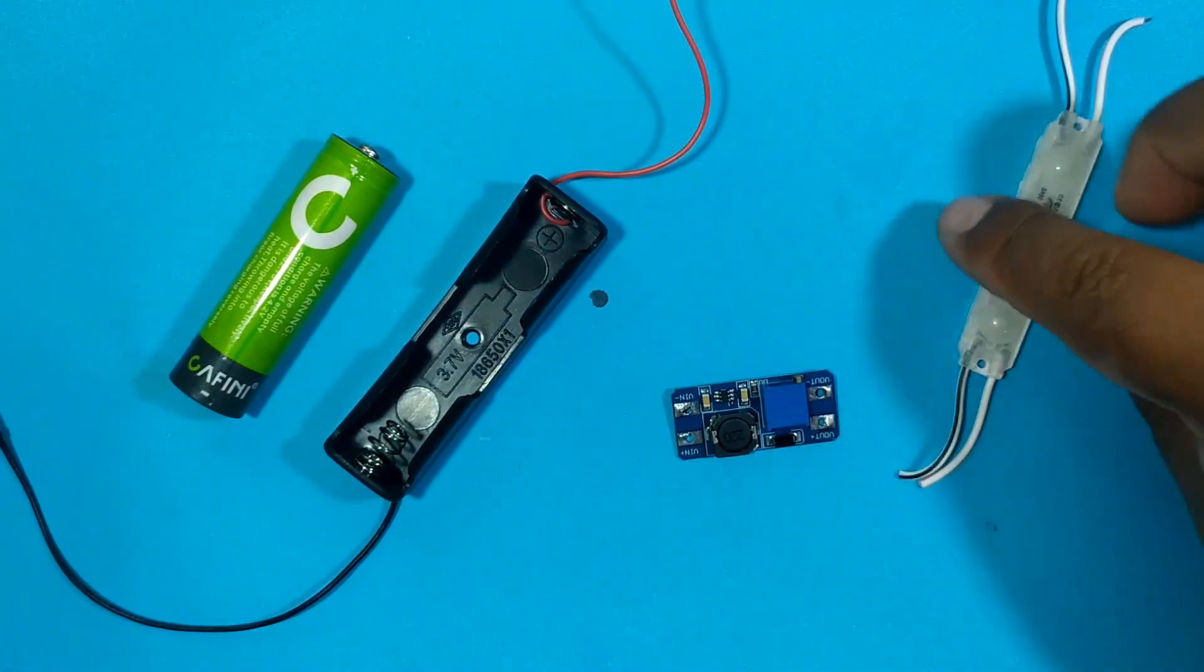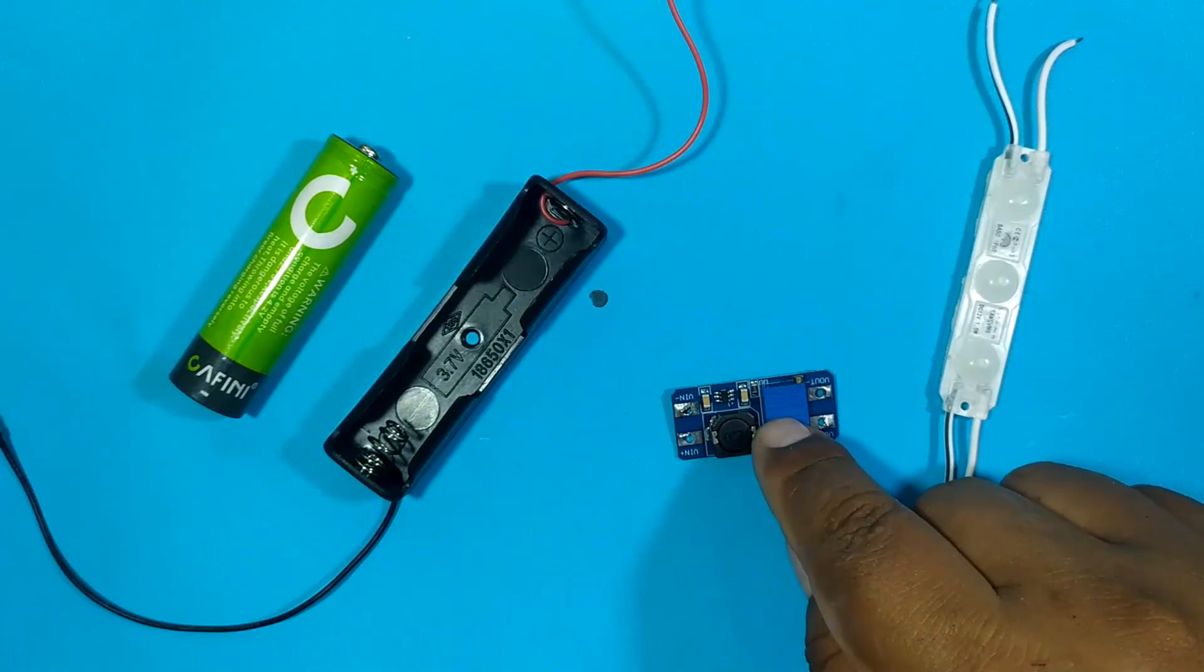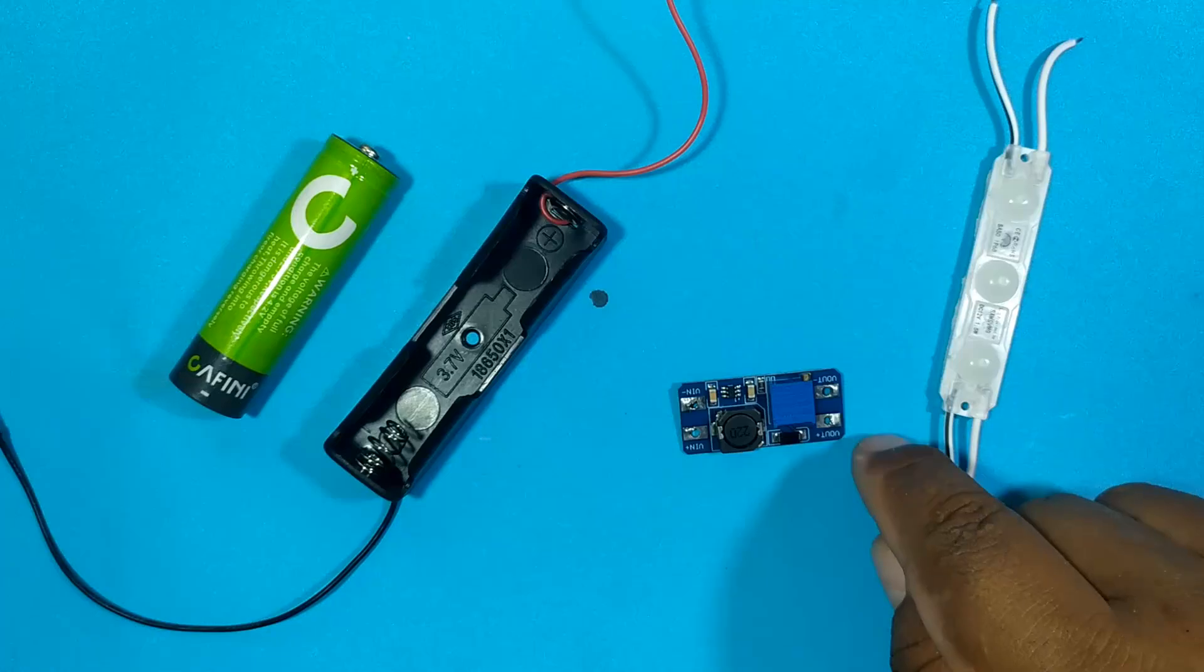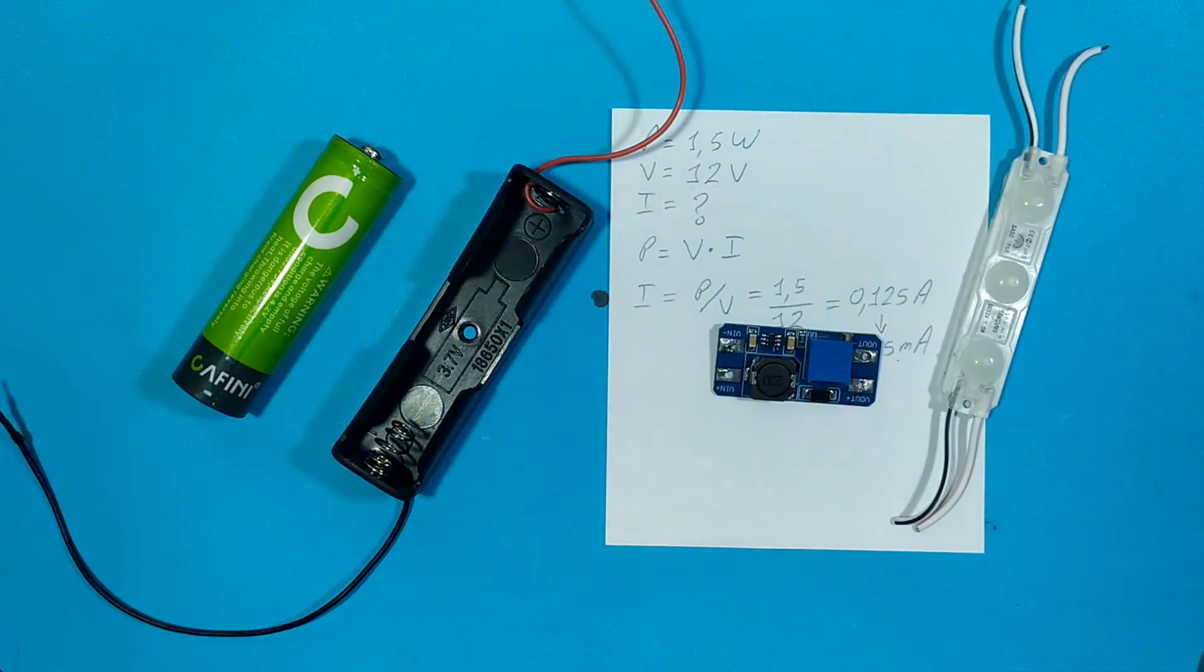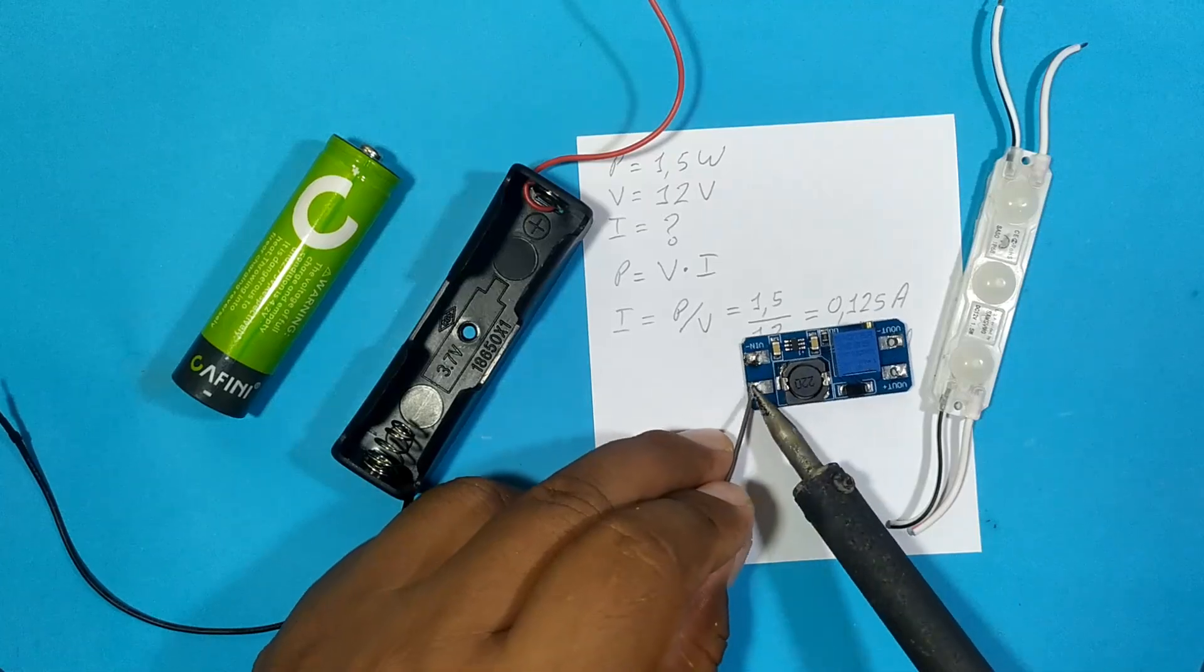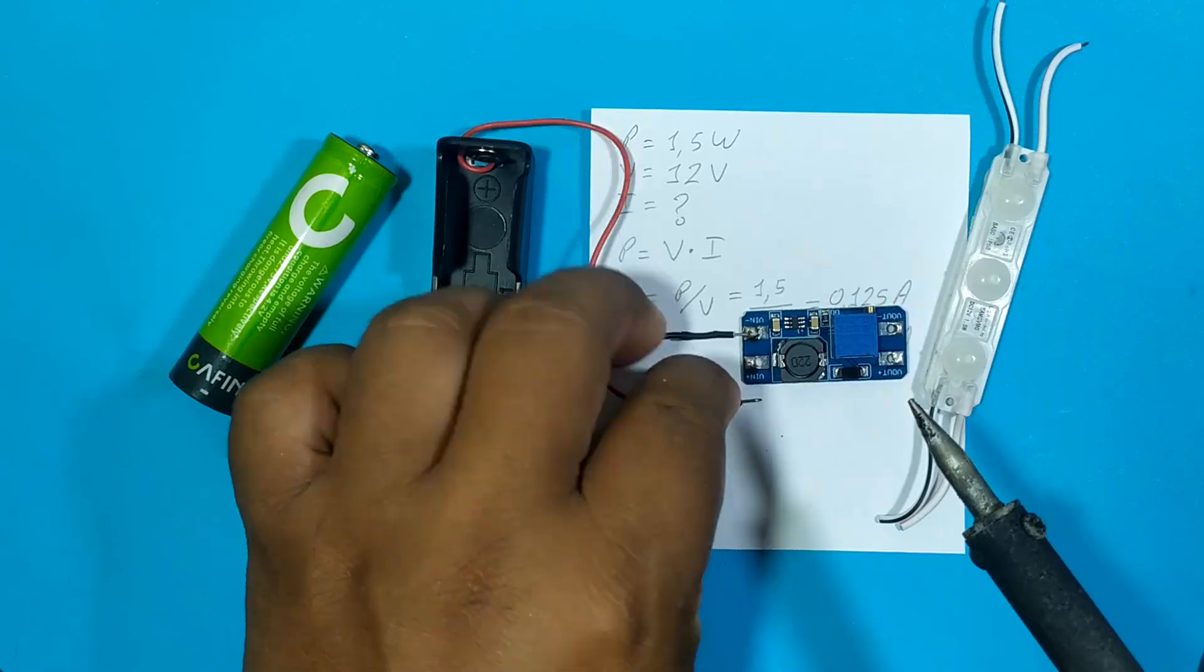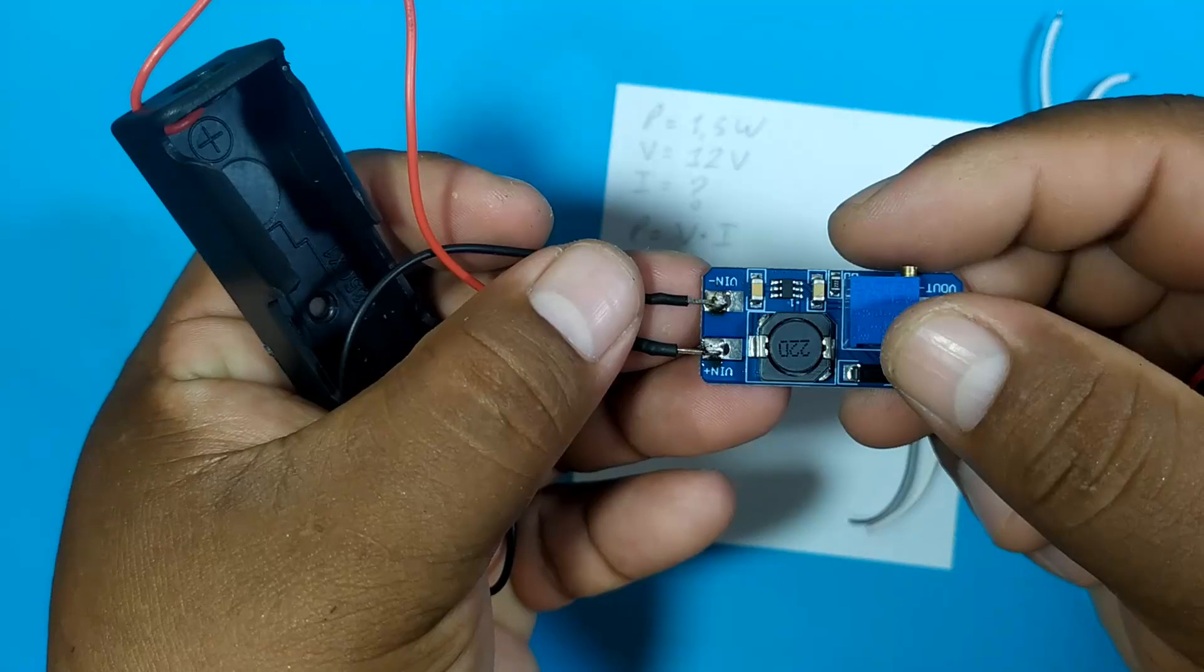Then we are going to solder what would be the LED module. But first we are going to have to calibrate our voltage booster module until we have the 12 volts output. We are going to solder what would be the voltage output.